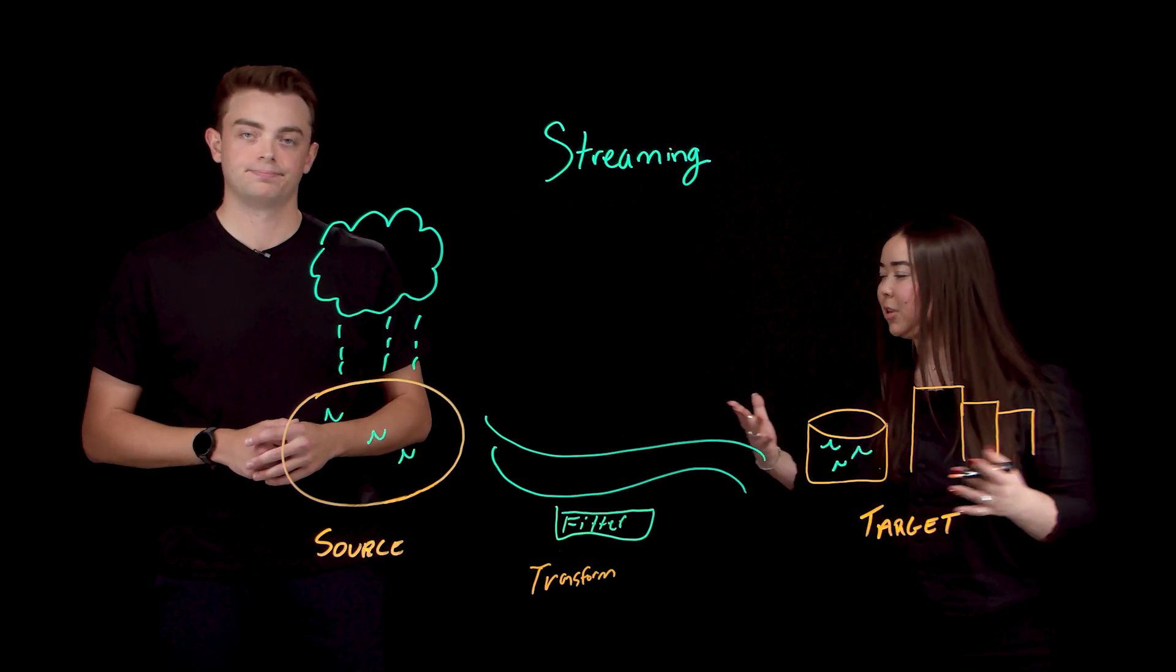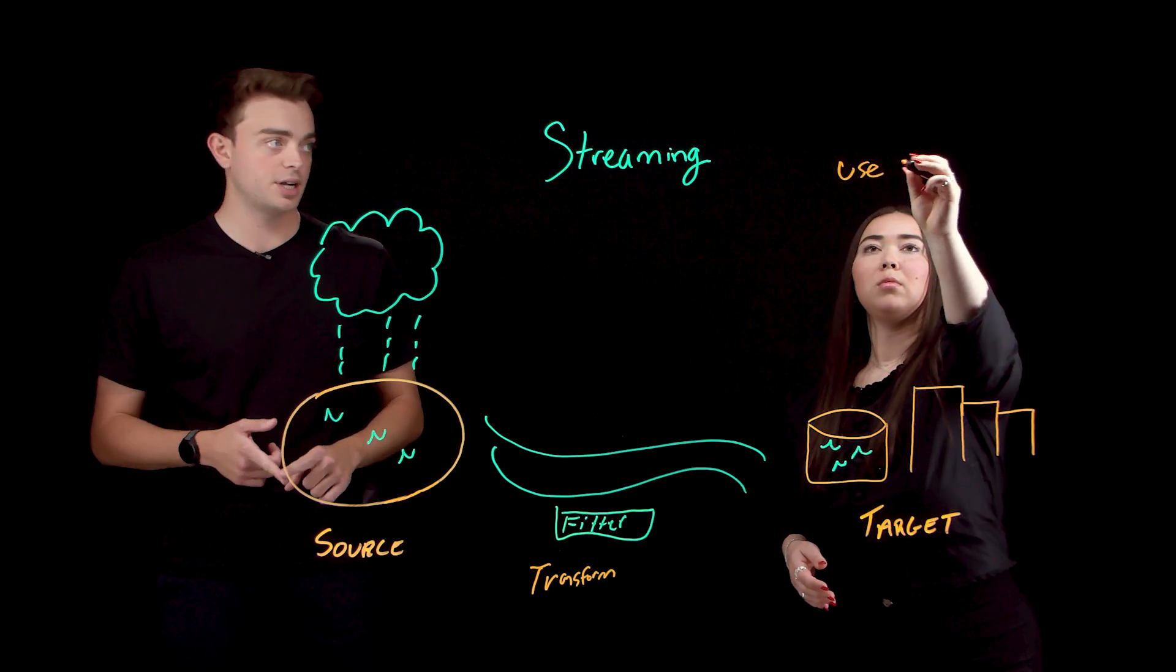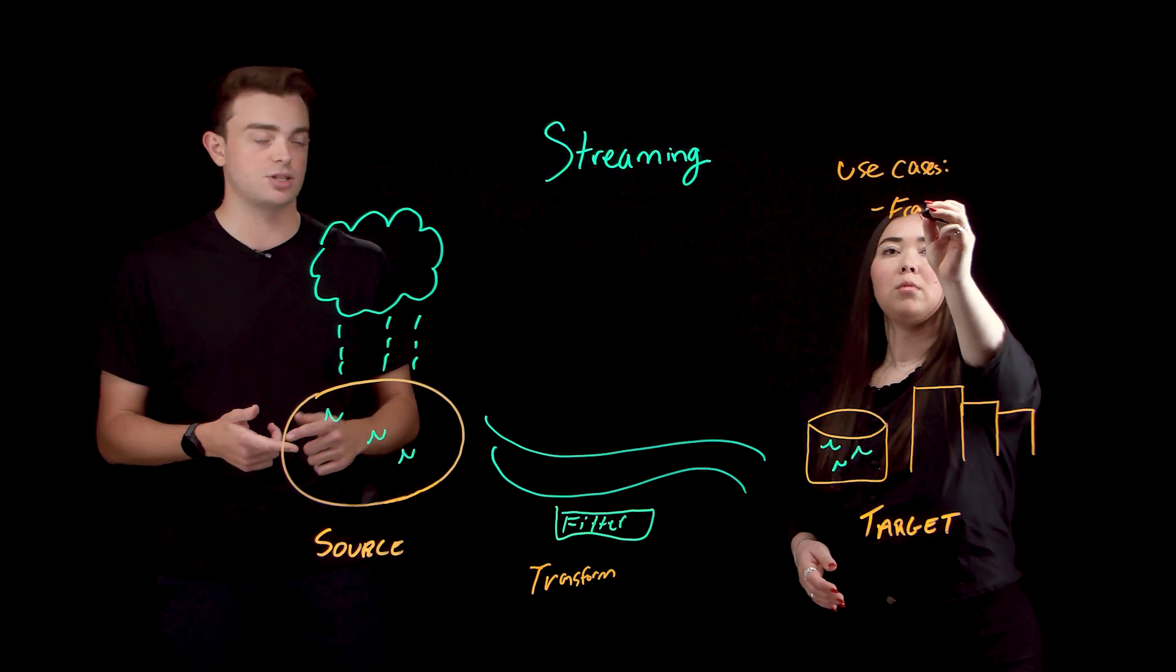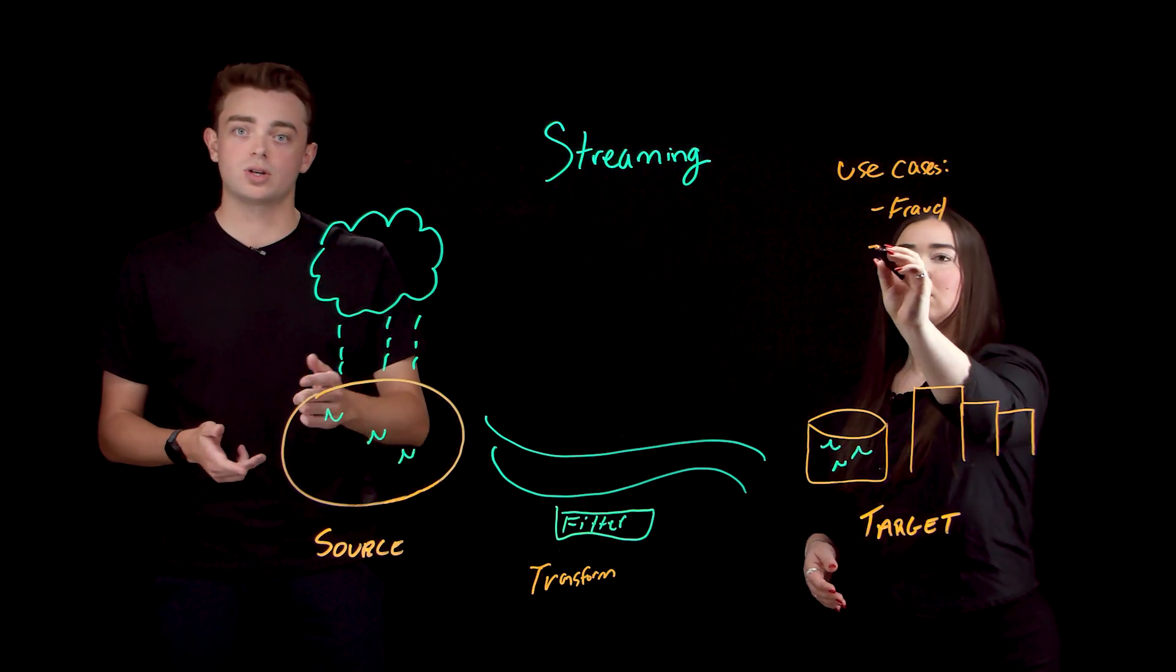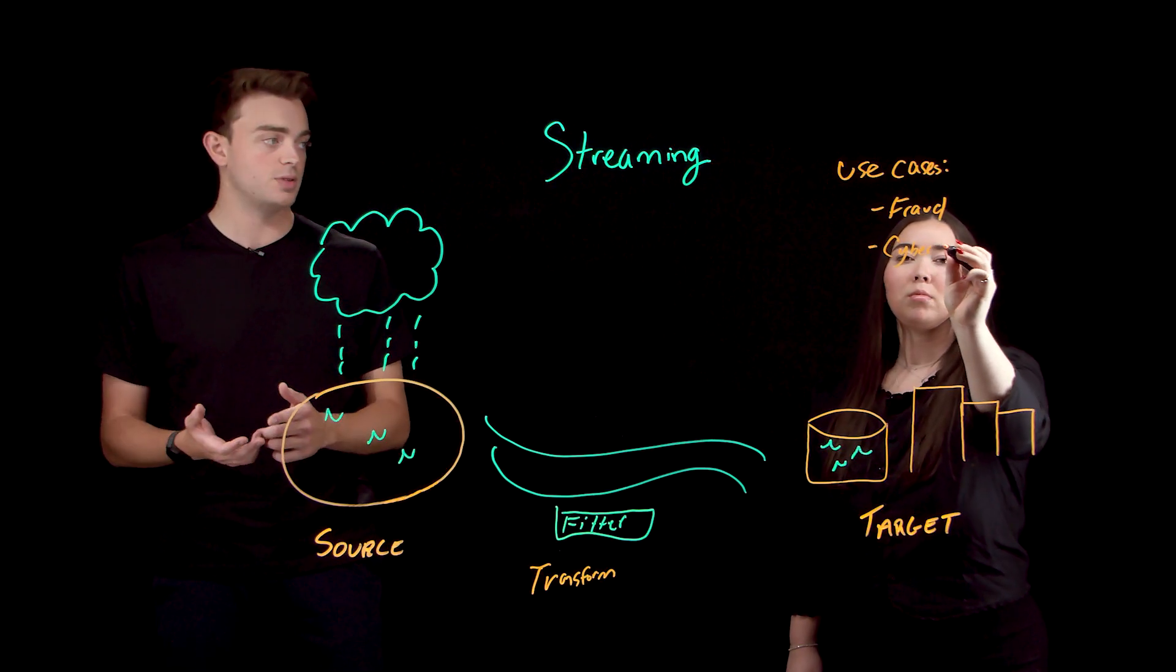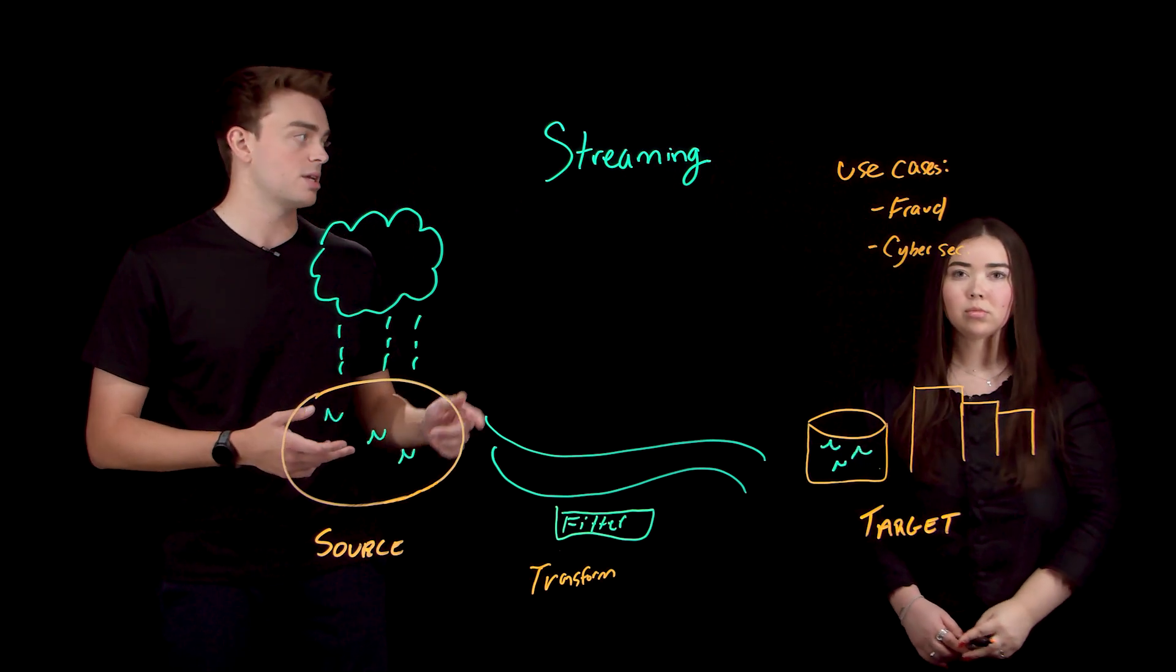So what are some use cases for real-time streaming pipelines? Real-time streaming is purpose fit for fraud detection use cases, enabling instant analysis of transaction data to catch anomalies as they happen. And it's also optimal for cybersecurity. So streaming pipelines provide continuous visibility into system and network activity, detecting threats in real-time.